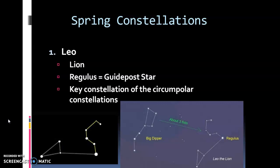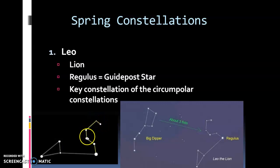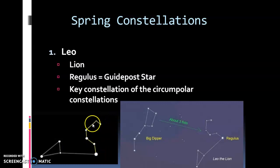The first one to look for is Leo the lion. It has a distinctive shape and is fairly easy to find. Leo has a very feline look — it's a lion lying down on his stomach with his head up in the air. The head and neck form a curve not unlike a backwards question mark, and they call this part the sickle, just like the tool or sickle cell disease from biology. At the bottom of the sickle is the star Regulus.